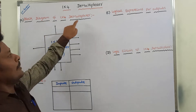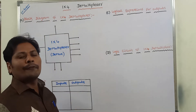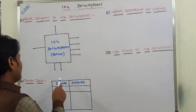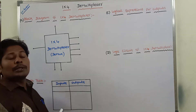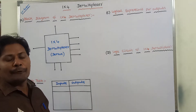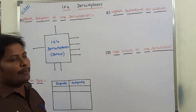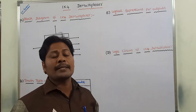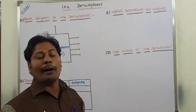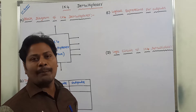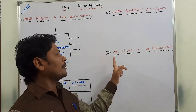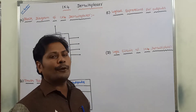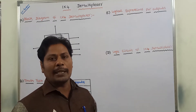First one is the block diagram of 1x4 demultiplexer. Second one is the truth table of 1x4 demultiplexer. Third one is logical expressions for outputs of 1x4 demultiplexer. And fourth one is the logic circuit of 1x4 demultiplexer.